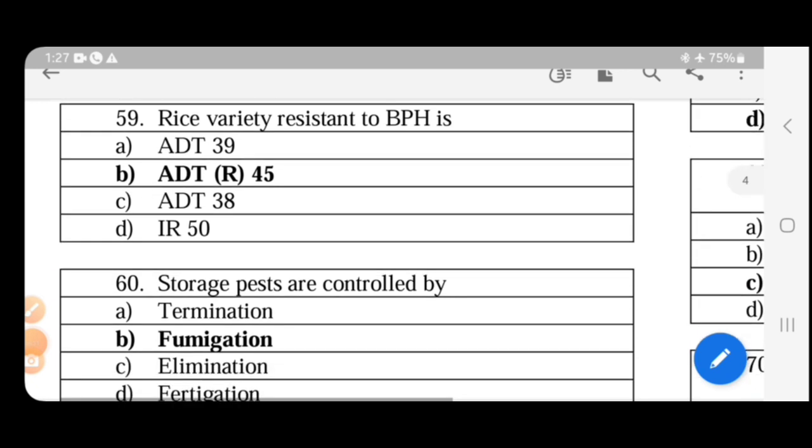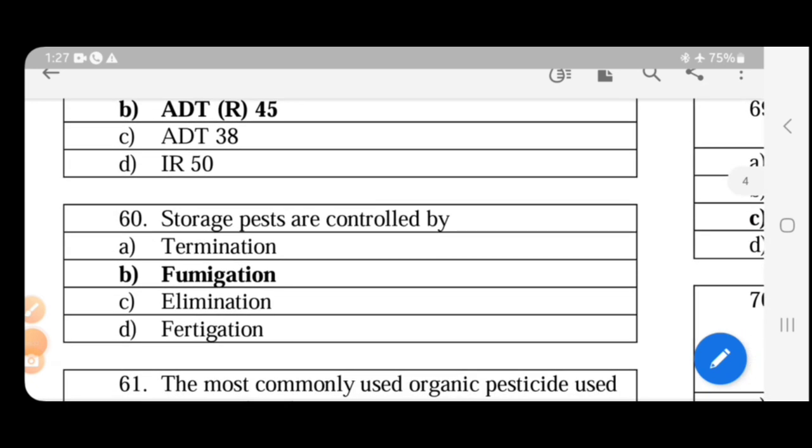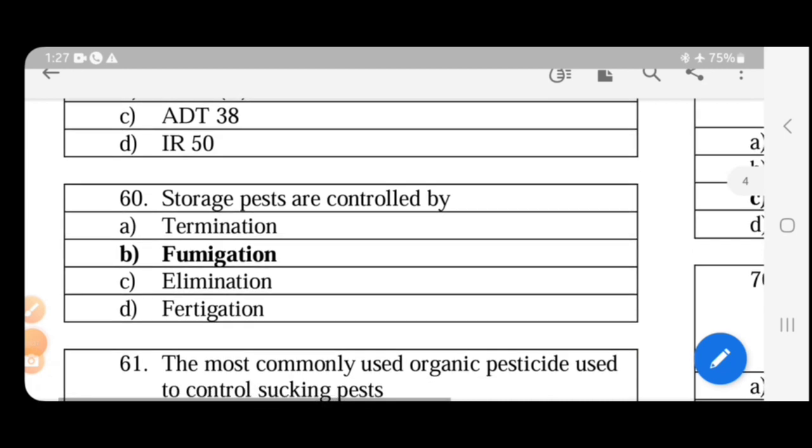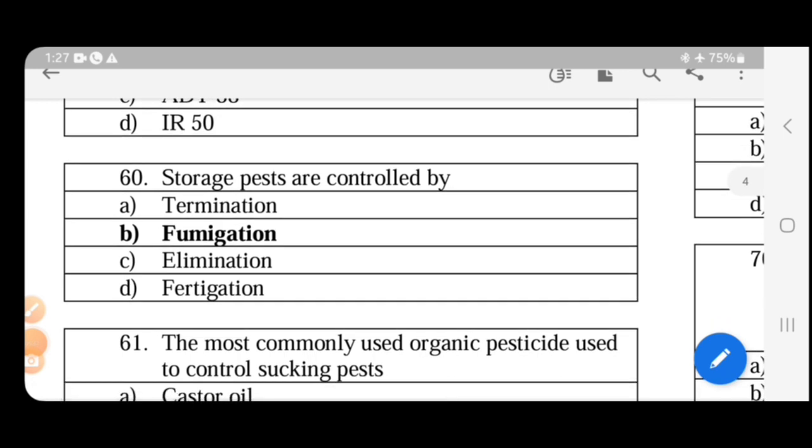Storage pests are controlled by fumigation. If we have grain storage, it can be controlled by fumigation. If we use fumigants like ethylene dibromide, ethylene dichloride, it is effectively controlled for storage pests.